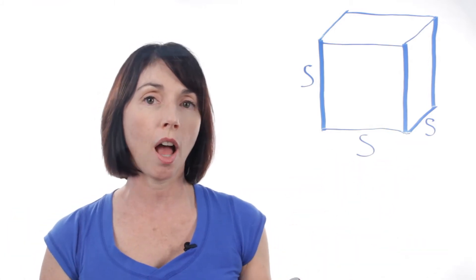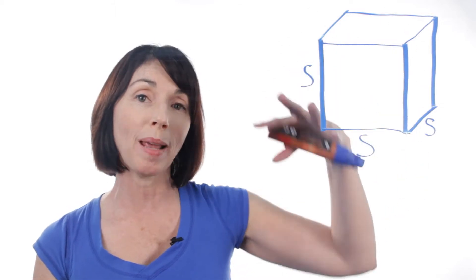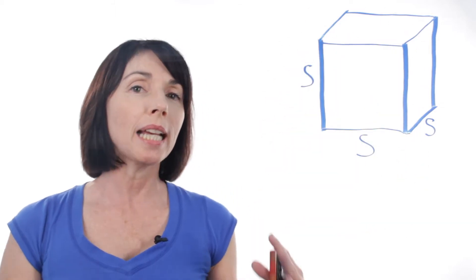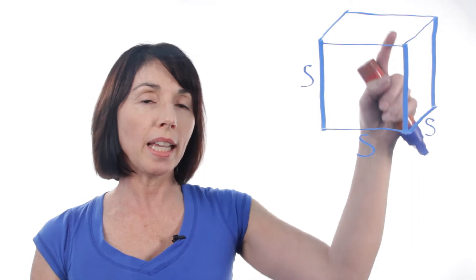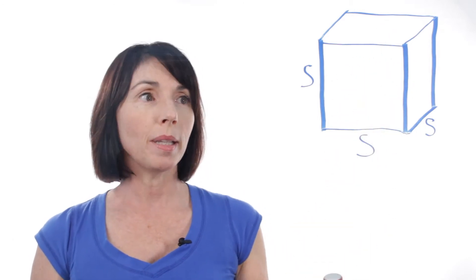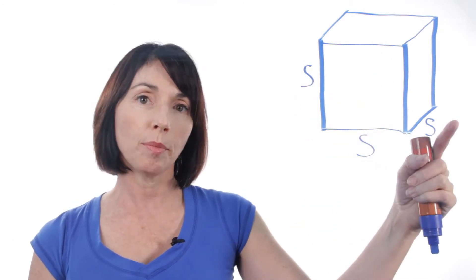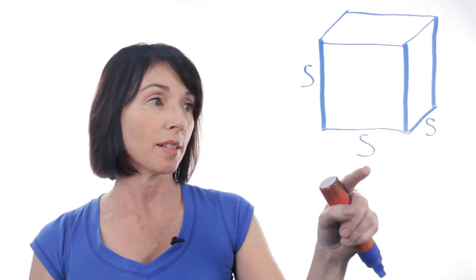Now, a cube is a three-dimensional object and the volume measures the space inside of it. Because it's a cube, that means each face of it is a square. That means that every edge is the same length, and I've just called them S.